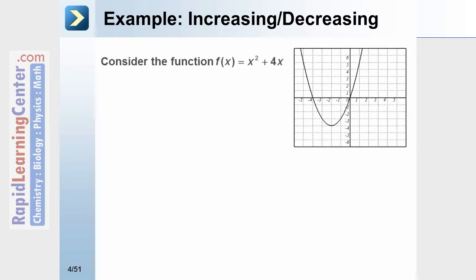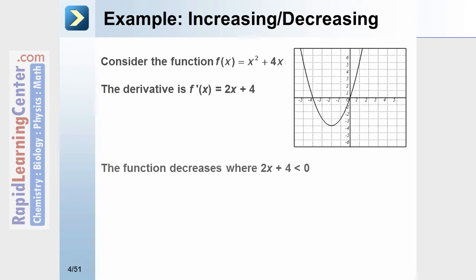Let's look at an example of increasing and decreasing. Consider the function f(x) = x² + 4x, as shown on the right. The derivative of this function would be 2x + 4. The function is going to decrease wherever the derivative is less than 0. If we solve this using algebra, we're going to end up with x is less than −2.